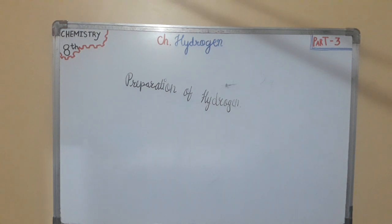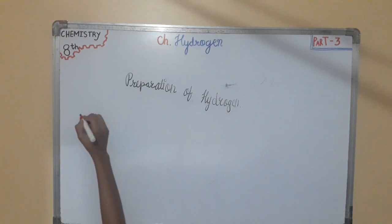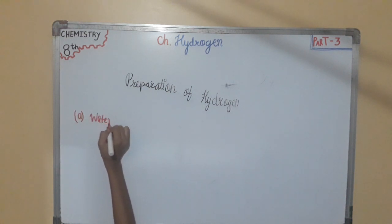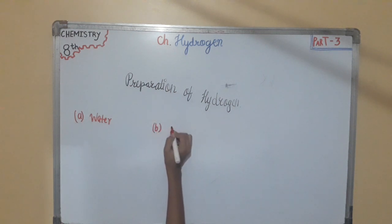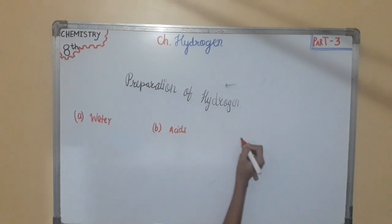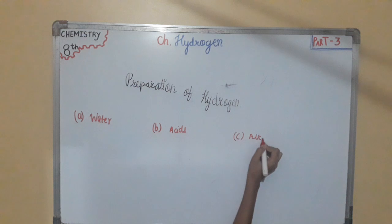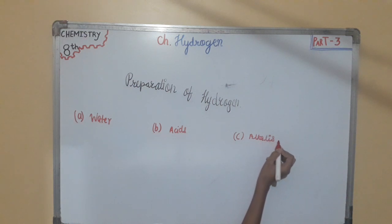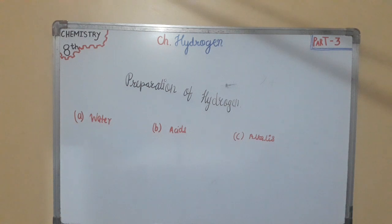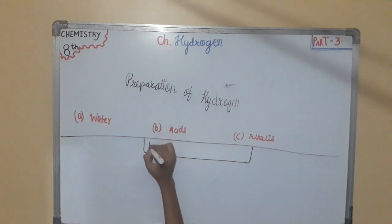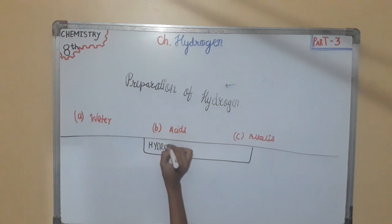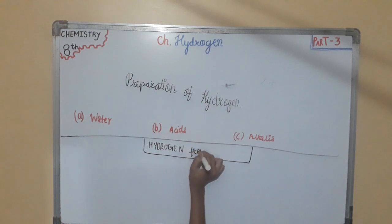There are three general methods for preparation of hydrogen. The first method is water, the second method is acids, and the third method is alkalis. In this part we will learn the first method, that is hydrogen from water.